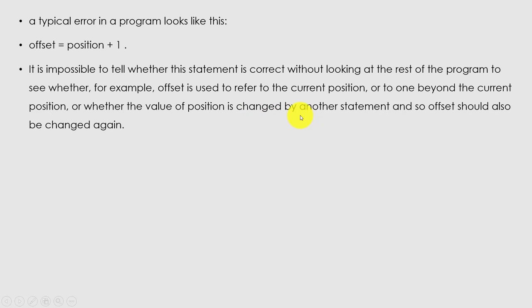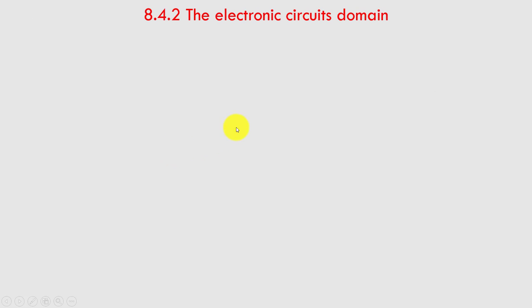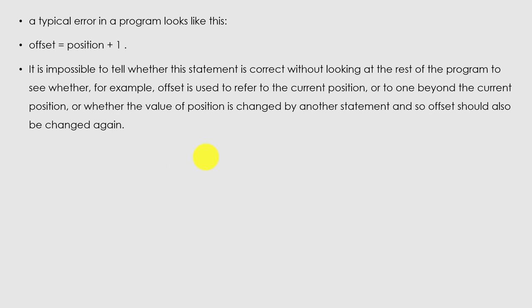For example, the sentence 'all animals have legs' is false for reptiles, amphibians, and importantly tables; the falsehood of this sentence can be determined independently of the rest of the knowledge base. A typical error in a program looks like 'offset = position + 1' — it is impossible to tell whether this statement is correct without looking at the rest of the program to see whether offset refers to the current position or one beyond it, and whether the value of position is changed by another statement. This was the end of the session. If you have any doubts or questions, please put them in the comments.